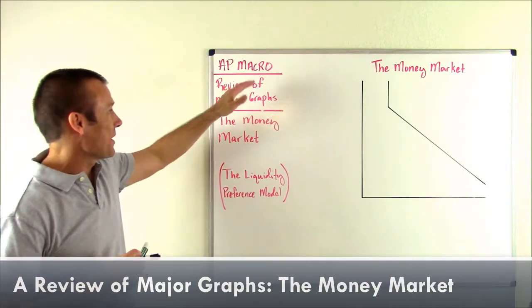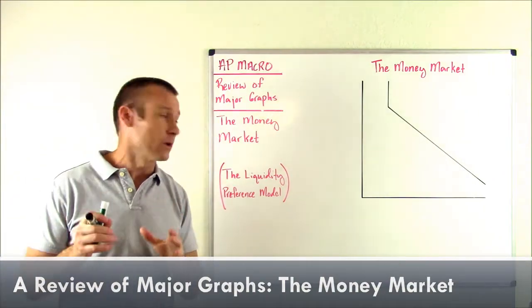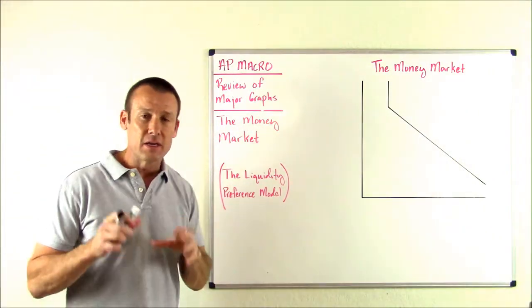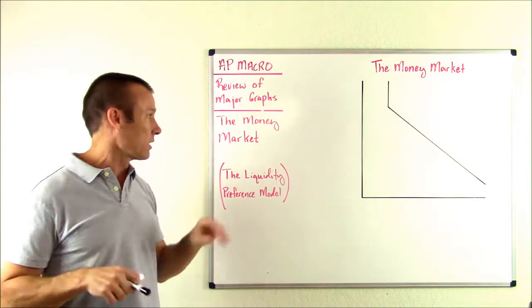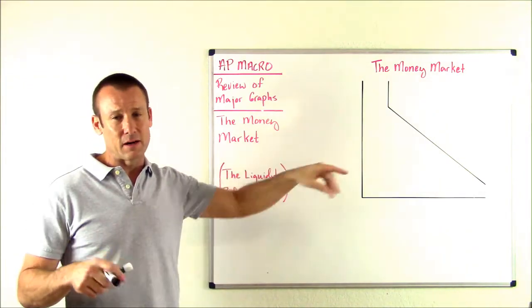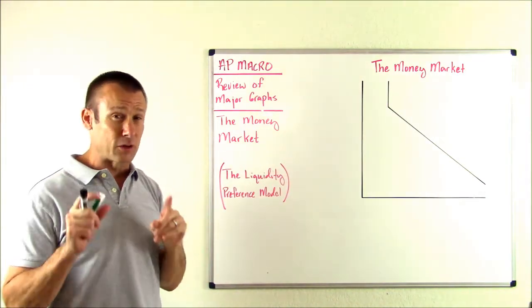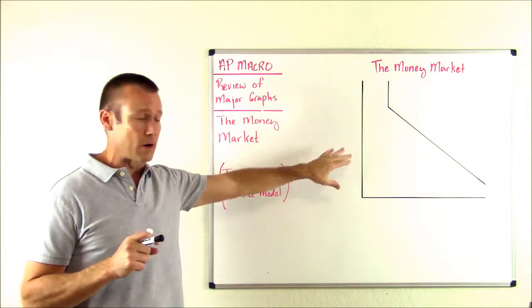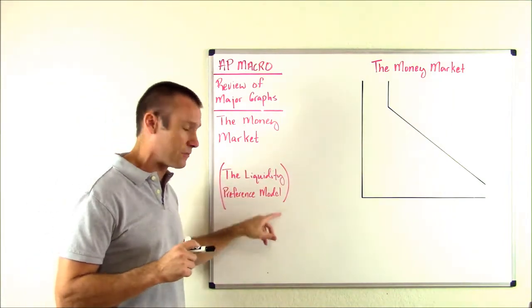Hey everybody. This is AP Macro. We're doing a review of major graphs, and we are focused on the money market. The model in this video is the money market, but I want you to know right at the beginning of this video, there's another name for this model: it is the liquidity preference model.